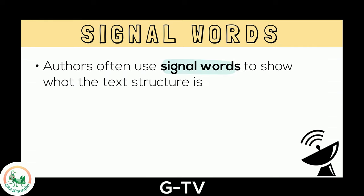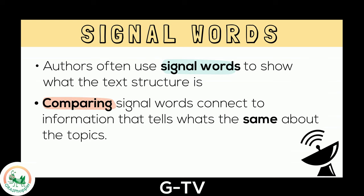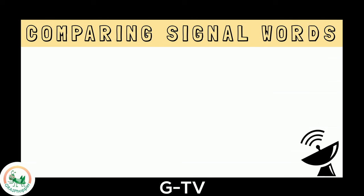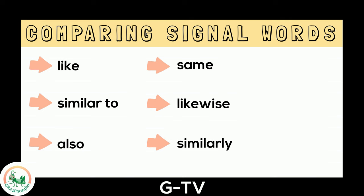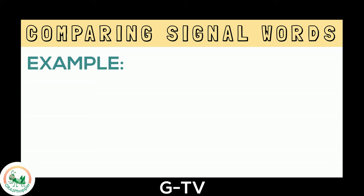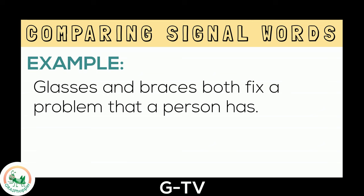Authors often use signal words to show what the text structure is. Comparing signal words connect to information that tells what's the same about the topics. Here are some signal words you may see for comparing: like, similar to, also, same, likewise, similarly, both, and alike. In this sentence, the author used the signal word 'both' to show comparing.